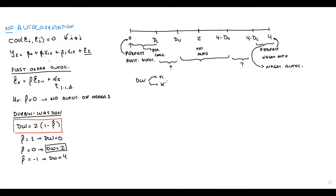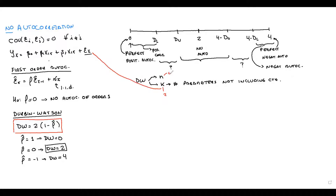In this model with two parameters (k=2) and n=40 observations, you look up the table. With 40 observations and k=2, DL is 1.391 and DU is 1.600. Those are the values you plug into your critical value diagram.